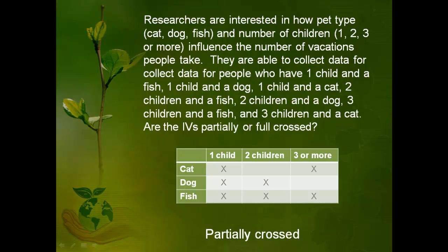And that's it — that's how you determine whether something is fully or partially crossed. Just make yourself that little chart, put the x's in the boxes of the things that have the combinations, and if there are any boxes that don't have x's, you know it's partially crossed.